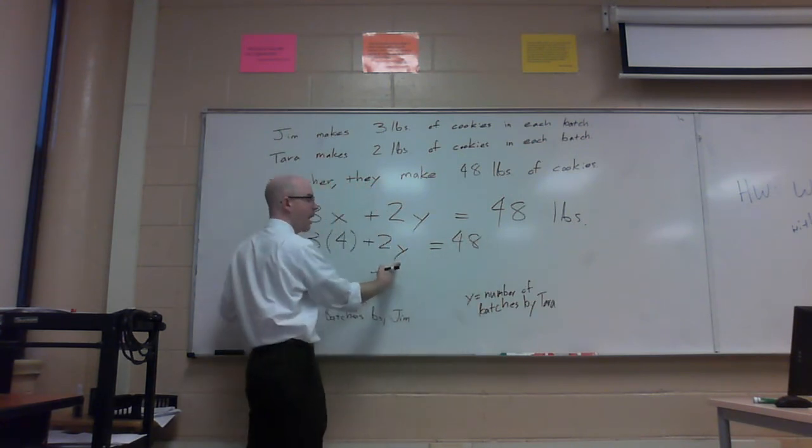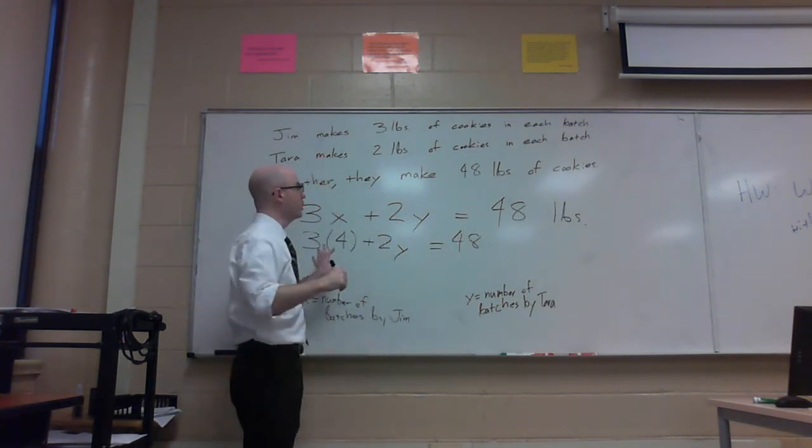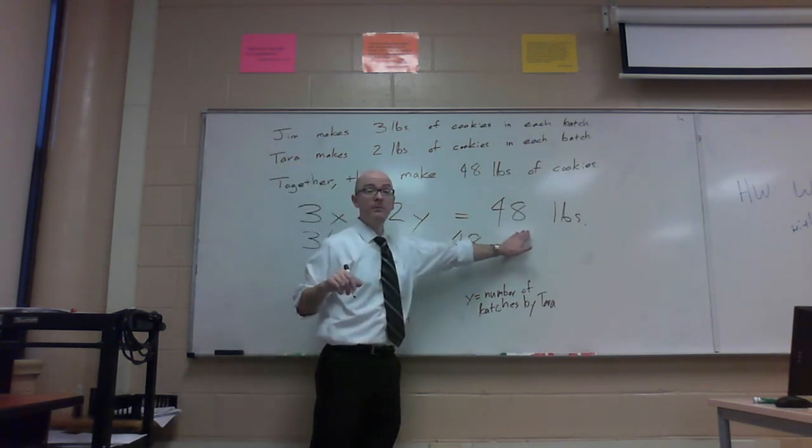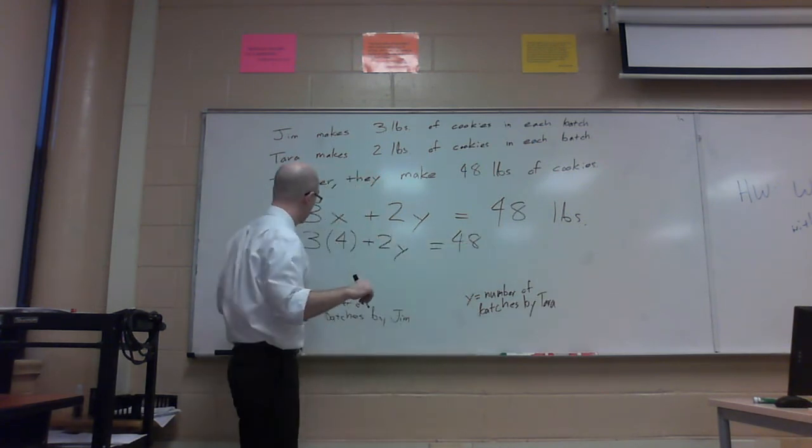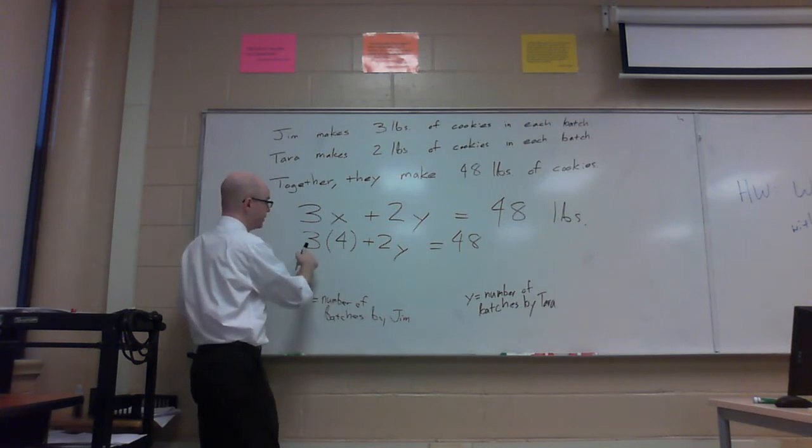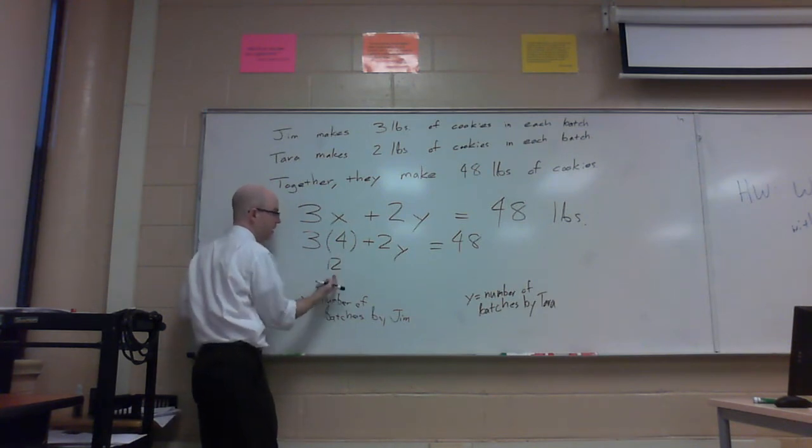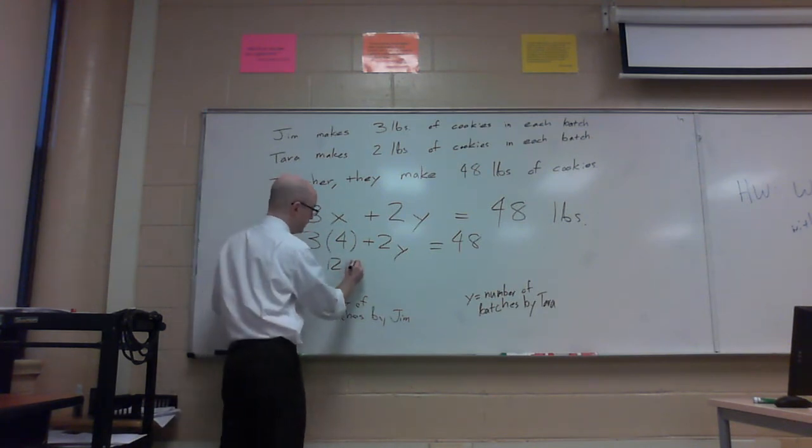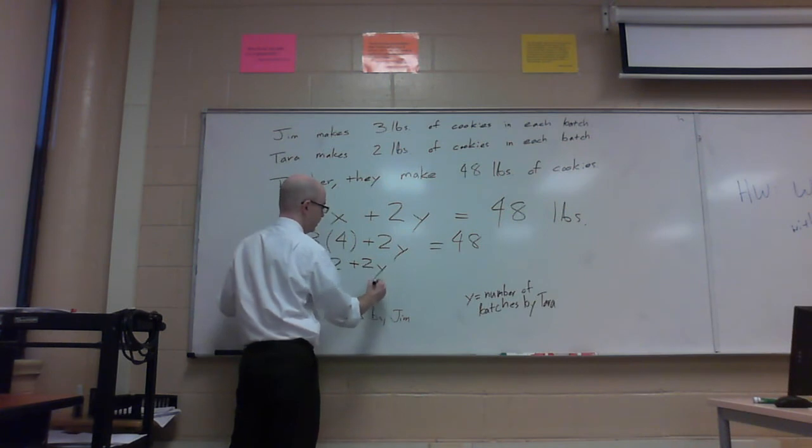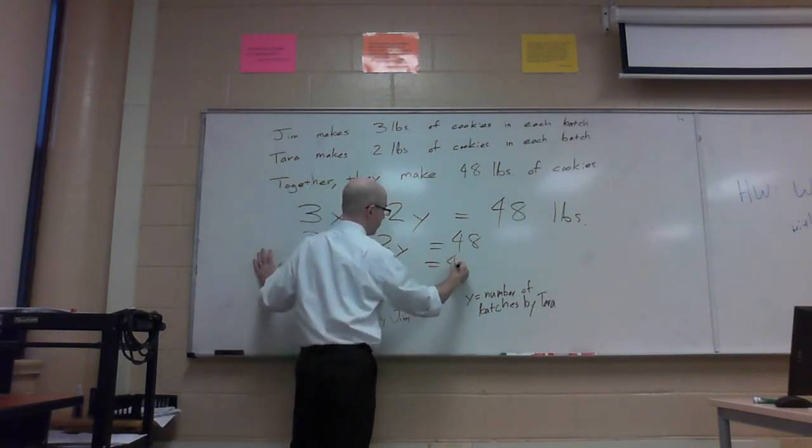So now we don't know how many batches Tara made, but we do know together that they made 48 pounds of cookies. So we can simplify this, 3 pounds per batch with 4 batches, multiply them together. Jim made 12 pounds of cookies, and it's still equal to 48.